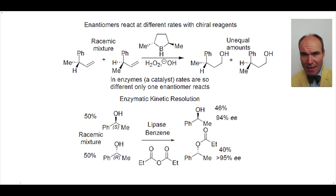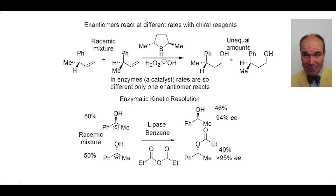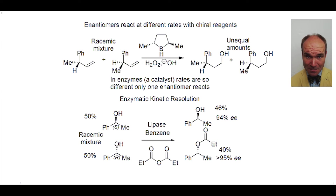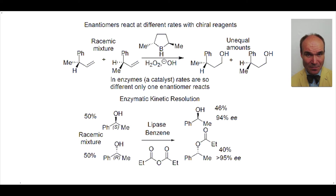We can normally get to enantiopurity with one crystallization from a 90 percent enantiomeric excess mixture, so this here is an excellent result. One form is an alcohol and the other an ester, so they can now be easily separated.